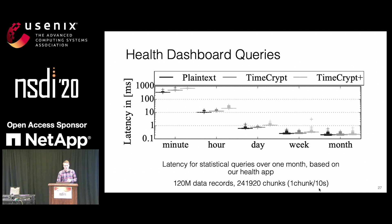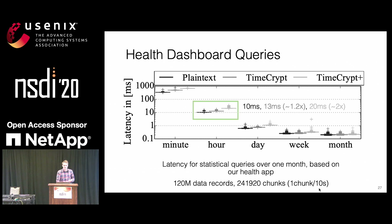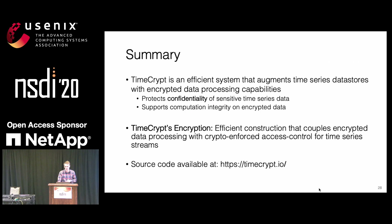Another important metric is latency. The dashboard shows different plots, and we measured how long it takes to query one month of heart rate data at different resolutions. TimeCrypt is quite close to plaintext, introducing only about a 20% latency overhead across resolutions. The overhead increases linearly with resolution because more data must be decrypted. Overall, TimeCrypt meets the performance and scalability requirements and performs close to operating on plaintext data.